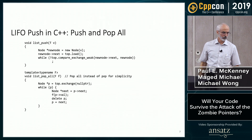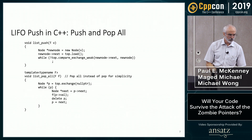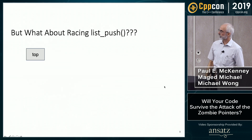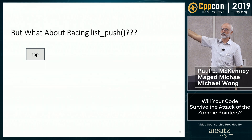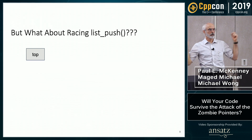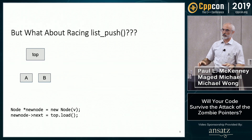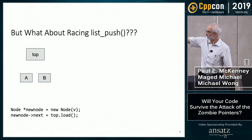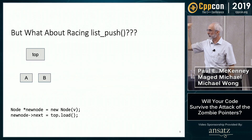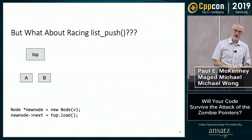Let's look at a couple of use cases to see if we're really doing something useful. We're going to have two threads both doing list_push at the same time, starting with an empty stack — the top pointer is null. Each thread allocates a node (one has A, the other has B) and initializes it. Both pick up the top pointer, which is null, so both have their A and B with a null pointer now.